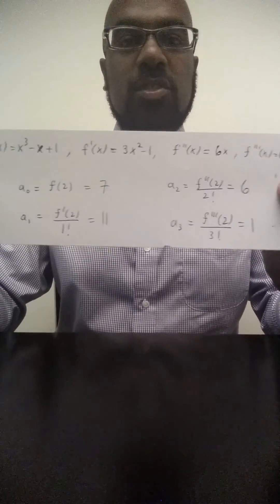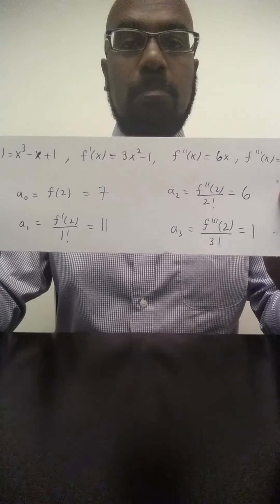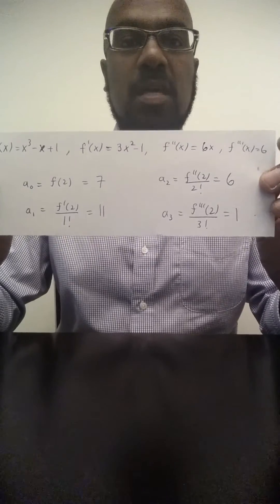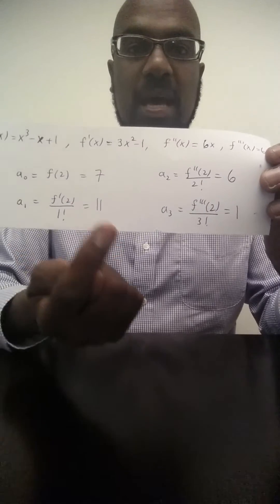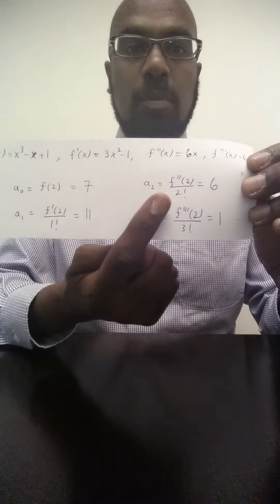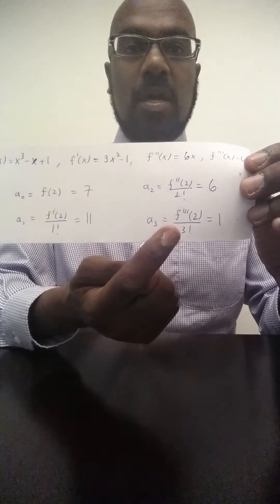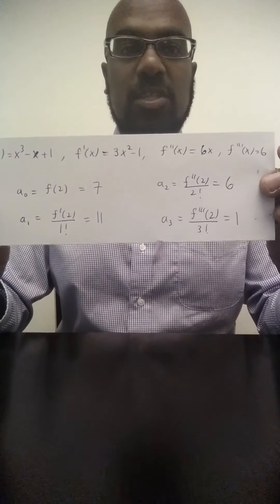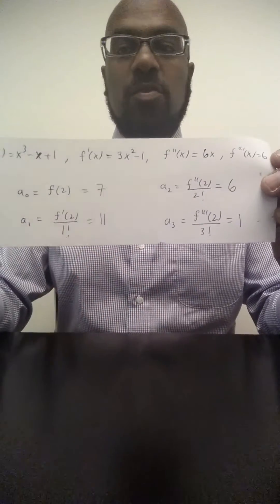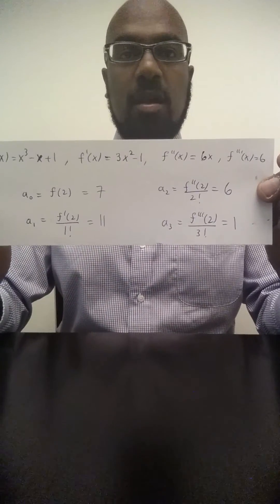Now one thing I want to mention as well is, be careful on the GRE subject test. This actually came from a practice test, and one of the answers had f(2), f'(2), f''(2), and f'''(2) as a possible selection. So remember to divide by the corresponding factorials. That's the way to get caught up on the test.